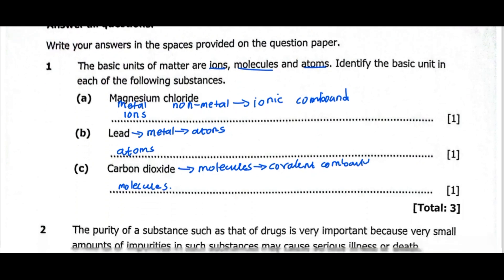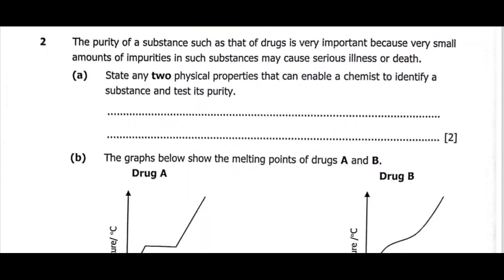Now let's move on to question 2. The purity of a substance, such as that of drugs, is very important because very small amounts of impurities in such substances may cause serious illness or death. State any two physical properties that can enable a chemist to identify a substance and test its purity. The first one, we can use the boiling point. The second one, melting point. The boiling point of an impure substance is greater than that of a pure substance, and the melting point of an impure substance is less than that of a normal one.